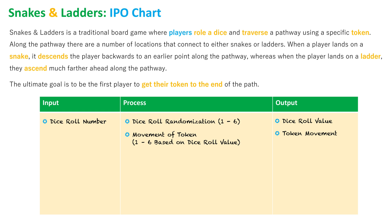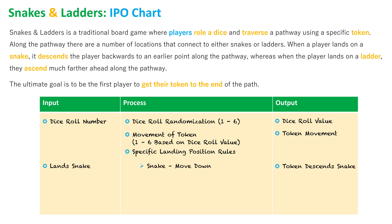Now that the token has moved to a spot, we apply the landing position rules. This is the next process. If a player lands on a snake, the process is to move the player's token back down the snake to a prior position — the output is the token descends the snake. On the other side, if they land on a ladder, they move up and the output is the token ascends the ladder, further ahead in the game.